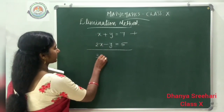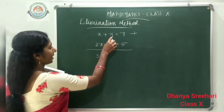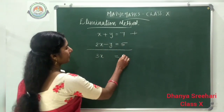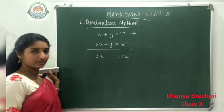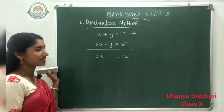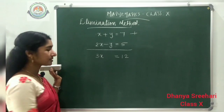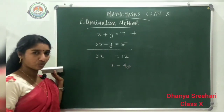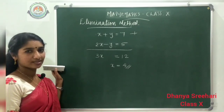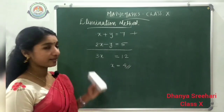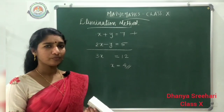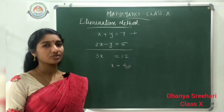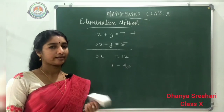Adding: x plus 2x gives 3x. Plus 1y plus minus 1y becomes 0. And 7 plus 5 equals 12. We got a new equation: 3x equals 12. It is easy to solve — x equals 12 divided by 3, that is 4. We got the value of x. Next we need the value of y. If we got one value, we substitute it into any one of the equations to get the other variable.